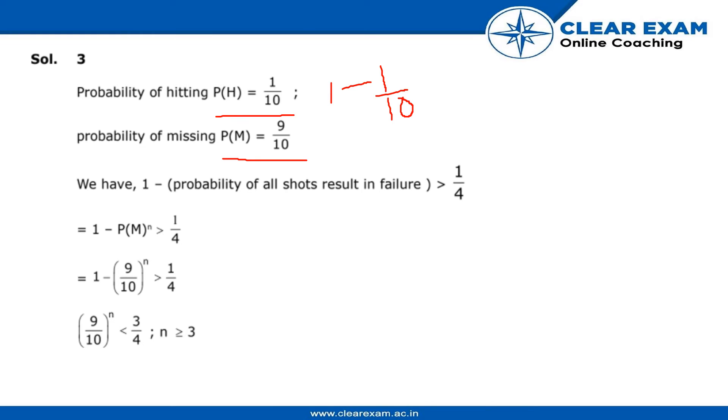Now, we have 1 minus probability of all shots resulting in failure is greater than 1 by 4. This is given in the question. So, we have to find out that least number of shots. We are taking probability of missing with a power of n and consider n to be the least number.